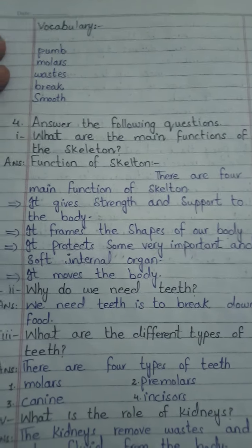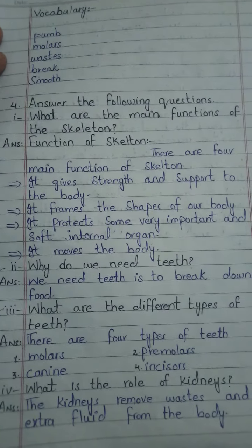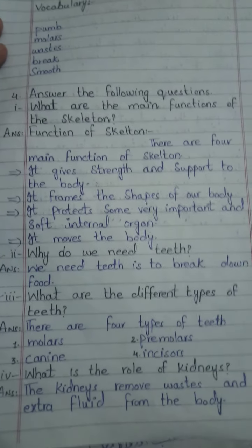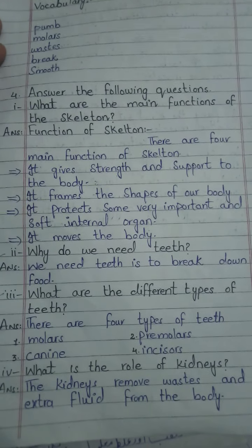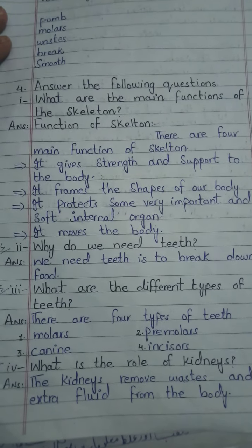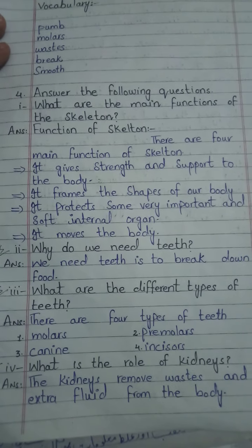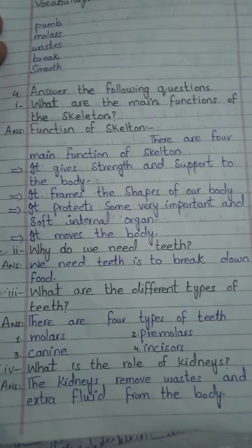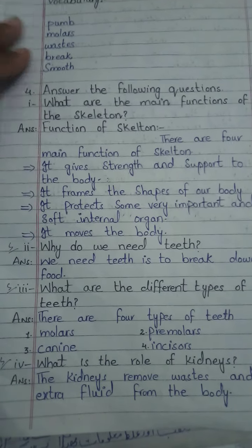Second question: why do we need teeth? We need teeth to break down food. There are four types of teeth: molars, premolars, canines, and incisors. What is the role of kidneys? The kidneys remove waste and extra fluid from the body.